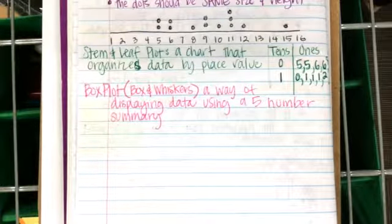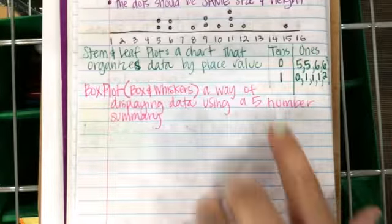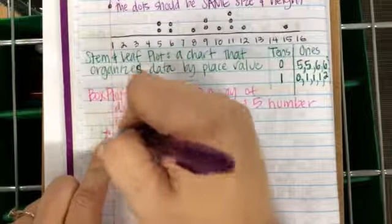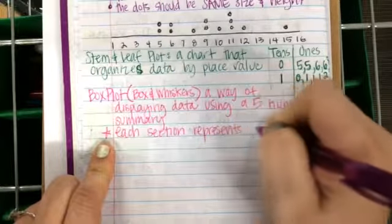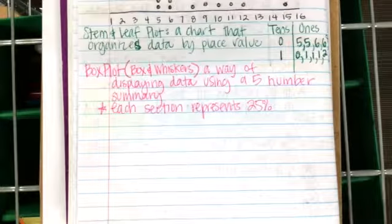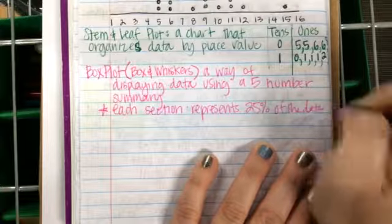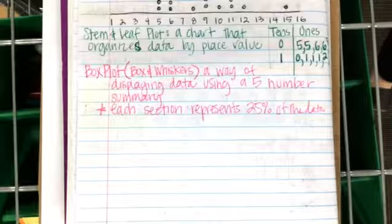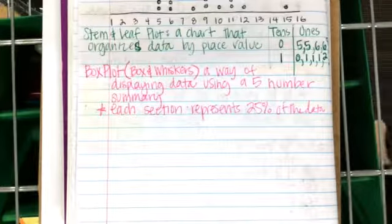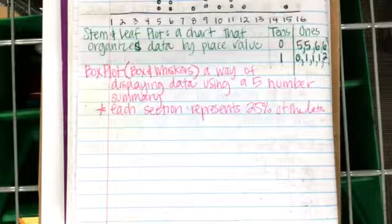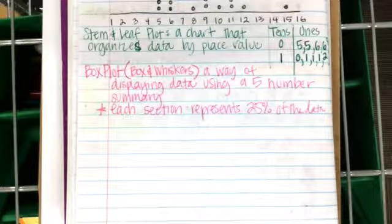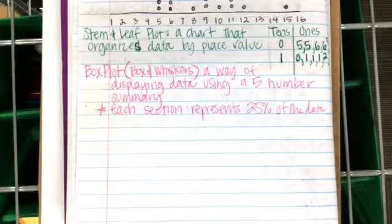Here's the key: there are five data values in the five-number summary, and each section represents 25% of the data. So how many sections are there? Four. There are four sections but we use a five-number summary — do not let that confuse you. You need five values to create those four sections. Think of your hand: five pieces with four sections in between.